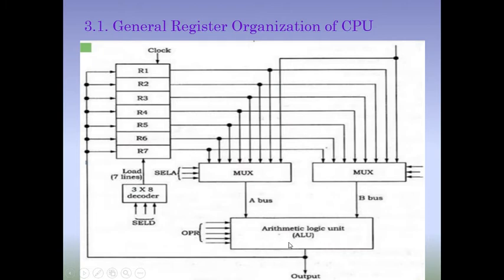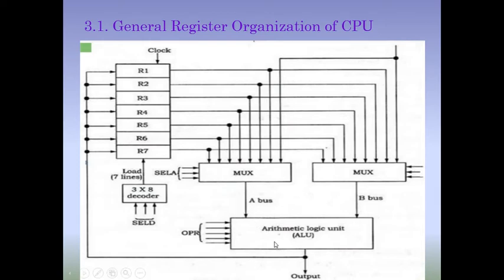We can also select the ALU operation — which operation should be performed. So we can select arithmetic operations like Addition, Subtraction, Increment, Decrement, or logical operations like AND, OR, XOR. We have 5 OPR control signals, so 2 to the power 5 equals 32 — meaning we can select a total of 32 operations. The selected operation will be performed on the inputs from Bus A and Bus B.